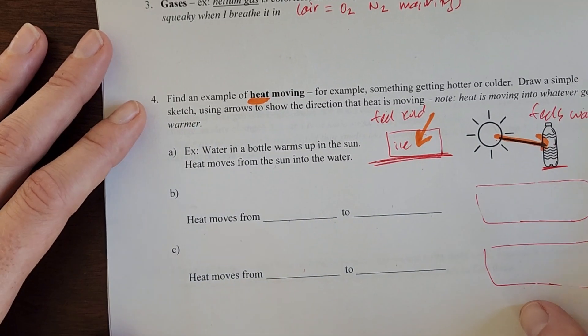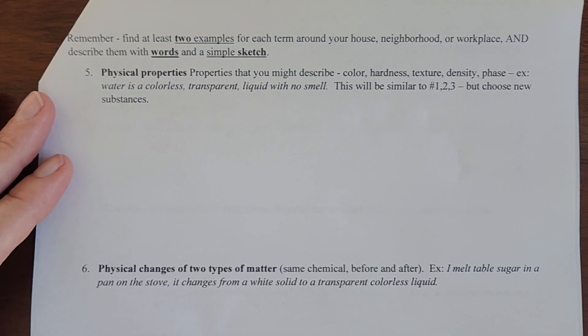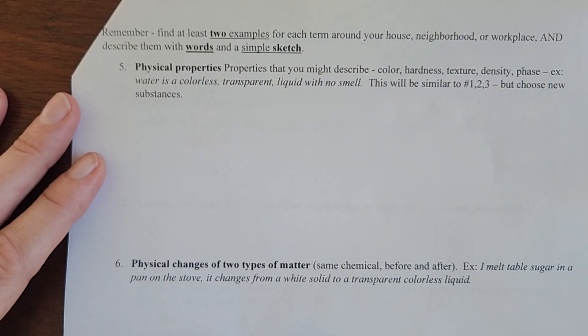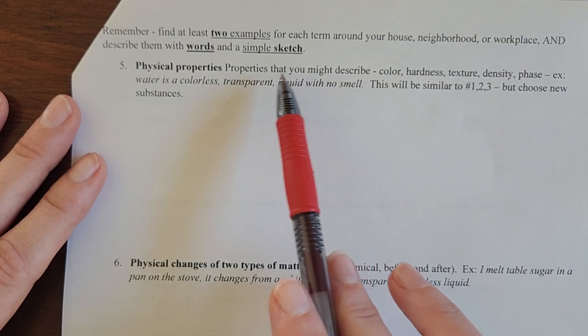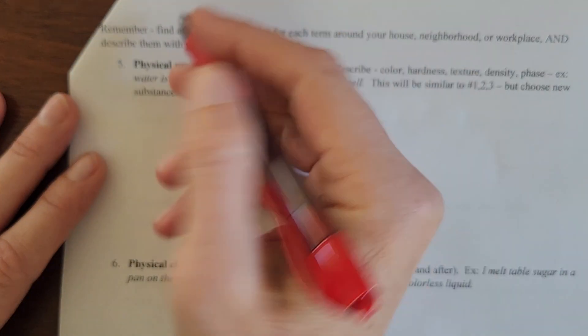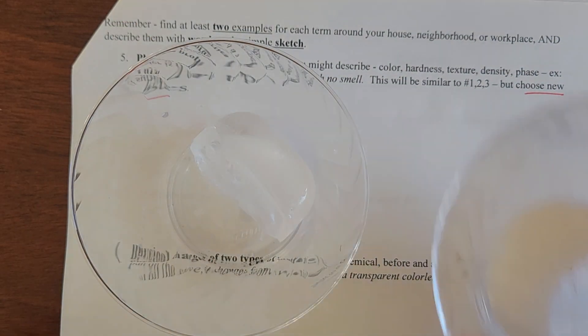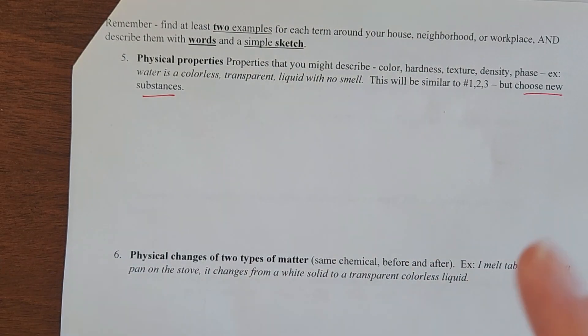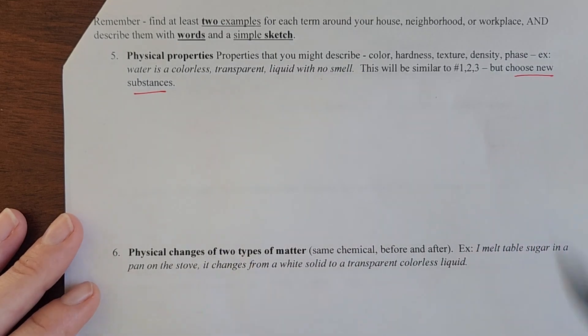Continuing on, keep up your scavenger hunt around your house, work, neighborhood, whatever. Here you're going to look for physical properties. This is going to be a bit redundant to some of the observations, maybe all the observations you made on the previous page. Again, two examples. Here it says choose new substances, so say I did ice and salt on the first page, find two new substances. Talk about what are some descriptions, and we'll be getting better and better at this through the semester.